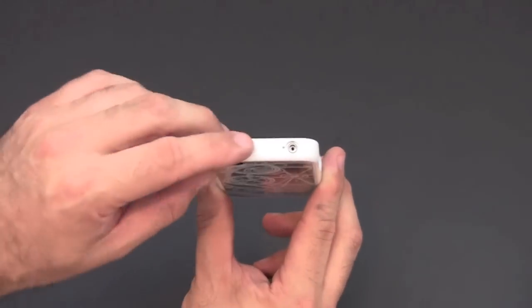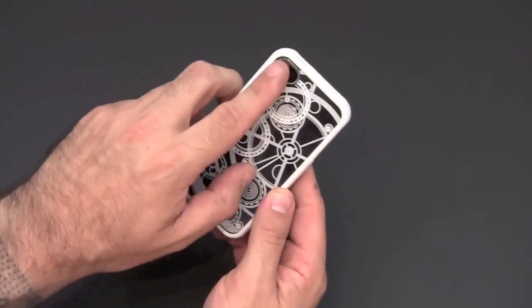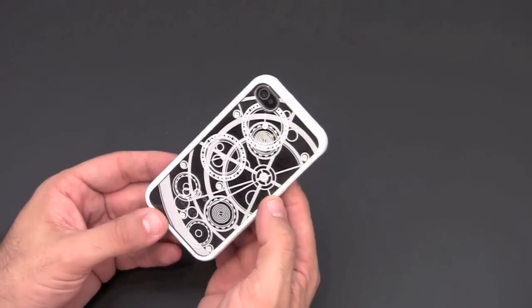Across the top, a somewhat narrow headset jack—you may have issues with larger headsets—and then a small cutout for the secondary mic and a large cutout as well for the sleep/wake button.